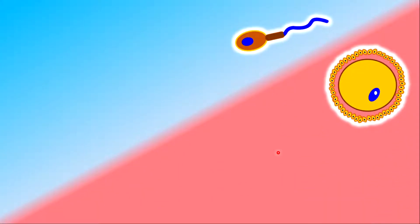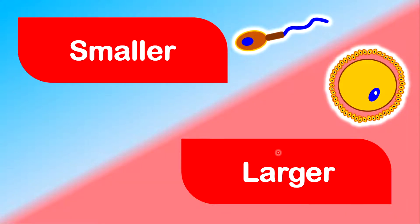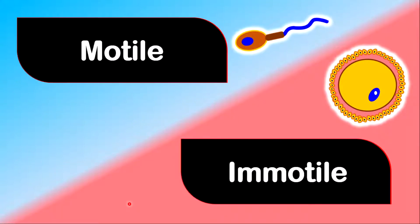Now let's look at some differences between the egg and sperm cell. The sperm is much smaller compared to the egg cell. The sperm is motile, which means it can move on its own. However, the egg cell is immotile.